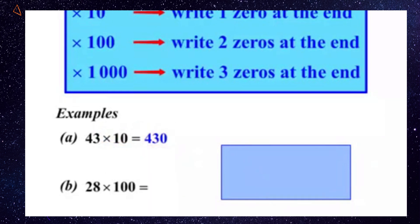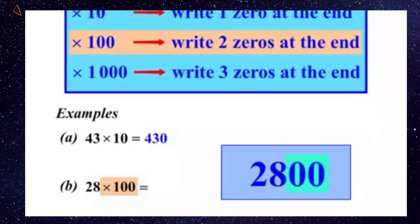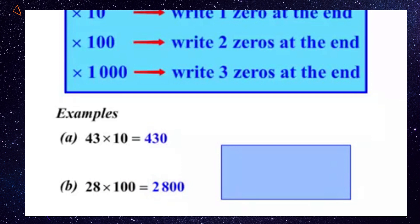Part B: 28 times 100. So let's write our 28 now. Now we're multiplying by 100. Looking at our rule, we're going to write two zeros at the end. So our answer there is 2800. It's a very easy lesson, this one, isn't it?